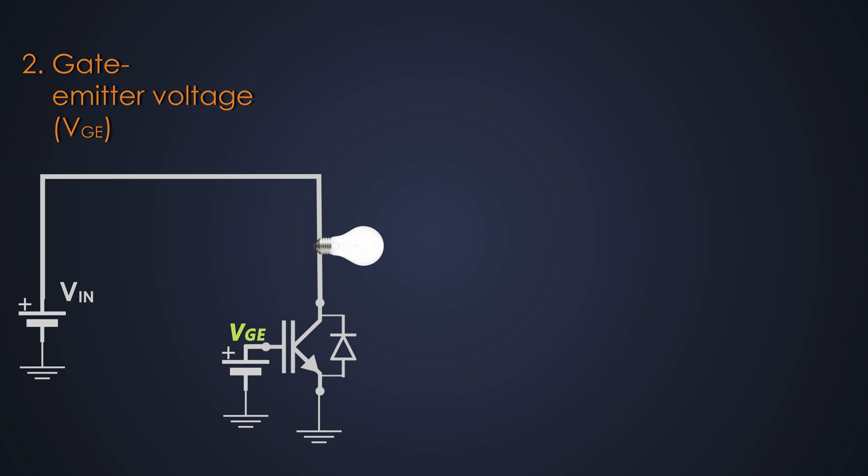The gate to emitter voltage is required to turn on an IGBT. As we saw in the last video, this signal allows the collector current to start flowing through the IGBT. When we apply this gate voltage signal, it should be at least more than the threshold voltage, only then the IGBT will turn on.